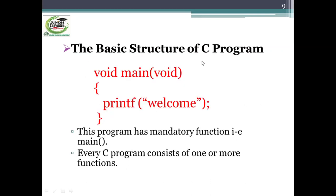Here is the basic structure of a C program: void main(void), with the opening and the closing curly brackets as the delimiters, and one statement ending with a terminator. This program has a mandatory function that is main. Every C program consists of one or more functions. As shown above, the main function is the mandatory function.